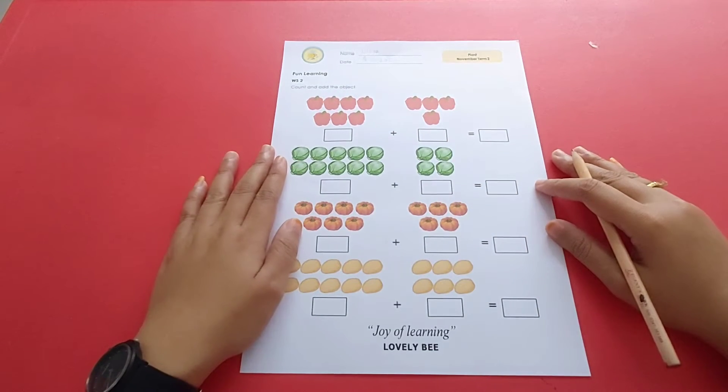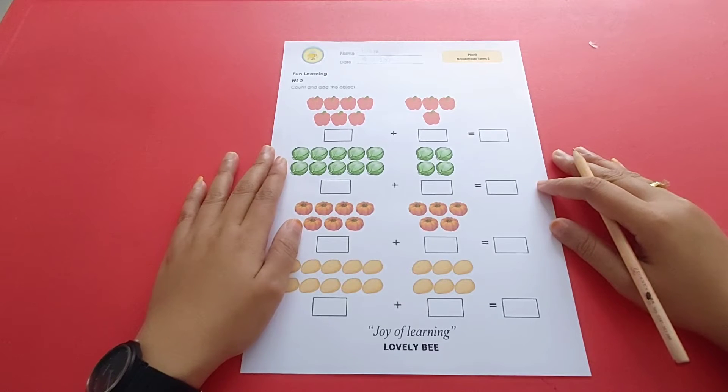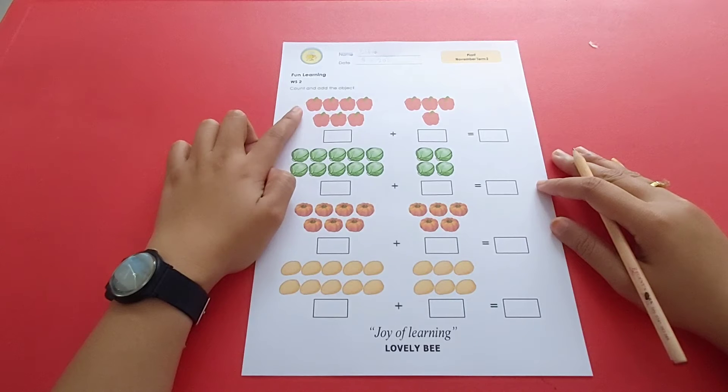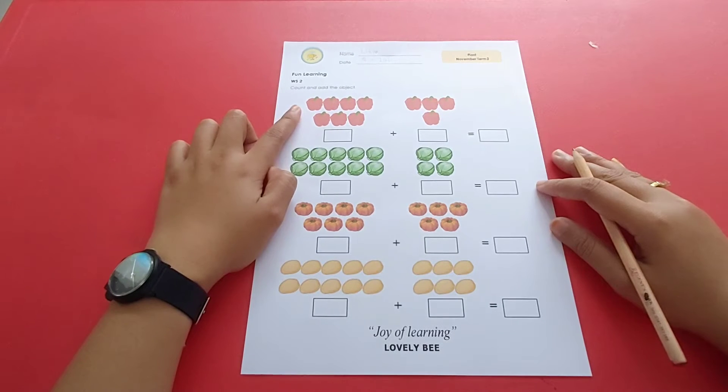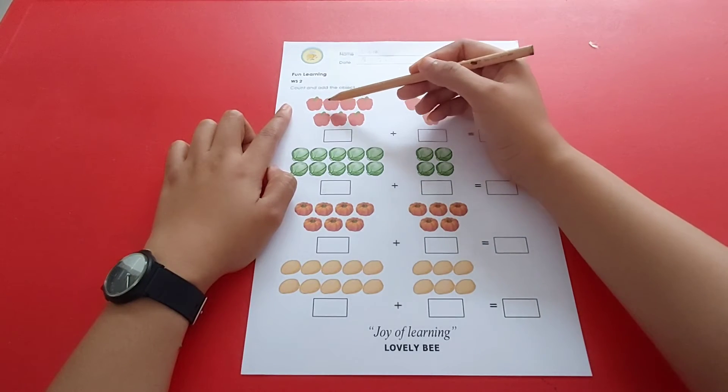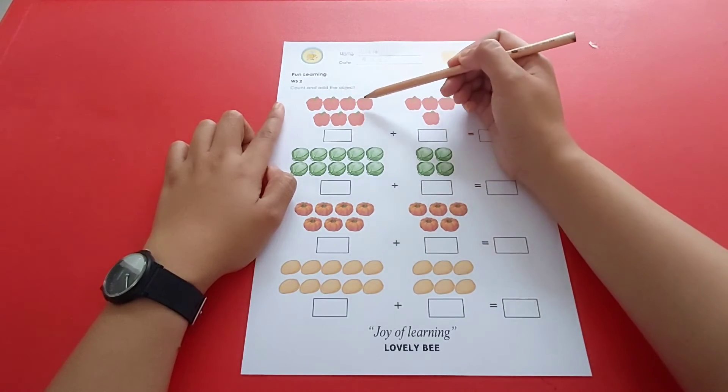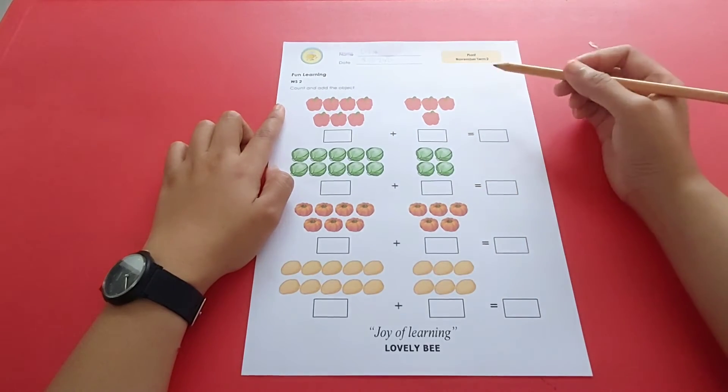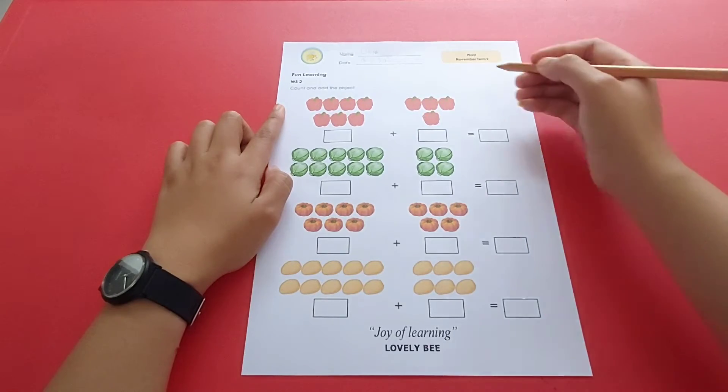Now let's try to count the first plant over here. This is a bell pepper, ini adalah paprika. Mari kita hitung jumlah paprikanya: one, two, three, four, five, six, seven. There are seven bell peppers. Now let's write down number seven over here.